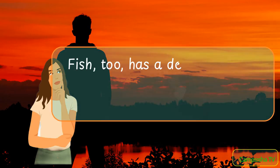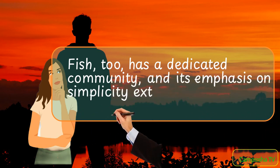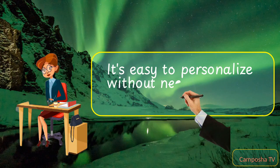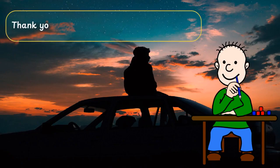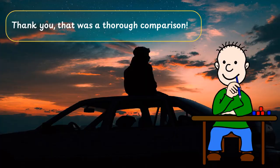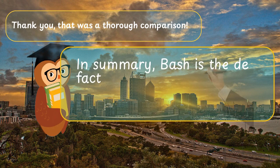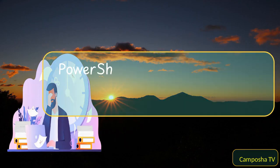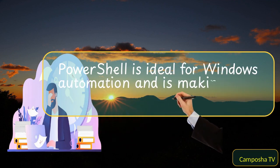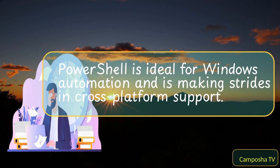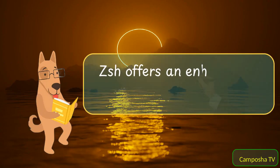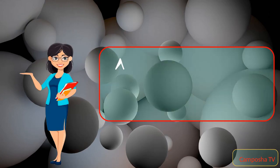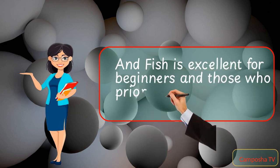Fish, too, has a dedicated community, and its emphasis on simplicity extends to customization. It's easy to personalize without needing extensive configuration. In summary, Bash is the de facto choice for traditional Unix scripting with widespread use. PowerShell is ideal for Windows automation and is making strides in cross-platform support. ZSH offers an enhanced, customizable experience for those familiar with Bash. And Fish is excellent for beginners and those who prioritize a user-friendly interface.